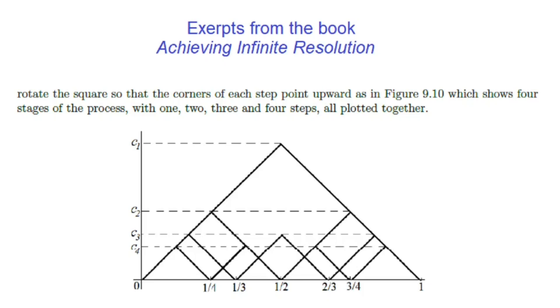To see why the existence of sharp corner points and where the derivatives fail to exist has nothing to do with this paradox, I need to draw graphs or sketch graphs that are not easy to draw by hand. So I'll use an excerpt from my book Achieving Infinite Resolution that is linked in the video description.